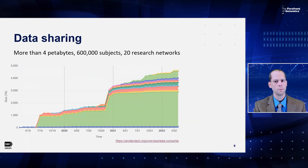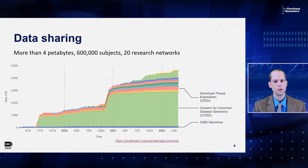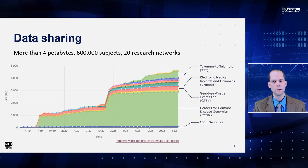Data sharing is a key goal for ANVIL. To date, the ANVIL has ingested more than four petabytes of data from over 600,000 research subjects across more than 20 research networks. This graph shows ANVIL's data ingestion over time by research network. I want to call out the first major data set, high-coverage 1,000 Genomes, the Centers for Common Disease Genomics, Genotype Tissue Expression Project, the Electronic Medical Records in Genomics eMERGE consortium, and the Telomere-to-Telomere group. More NHGRI research networks are currently being onboarded, including programs such as the Impact of Genomic Variation on Function, or IGVF, and the Genomics Research to Elucidate the Genetics of Rare Diseases.